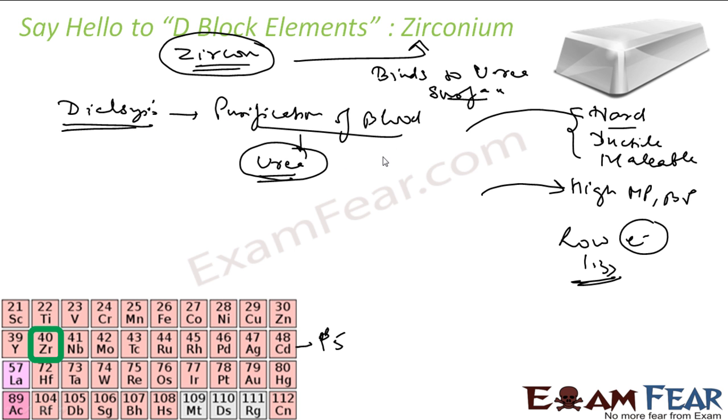In dialysis what happens is, the blood is made to pass through zirconium. And zirconium binds the urea. So with that, the blood is purified because the urea is bound to zirconium.